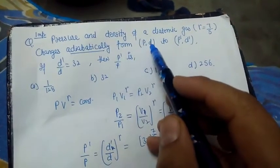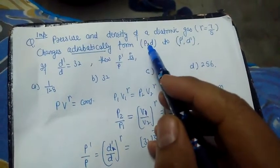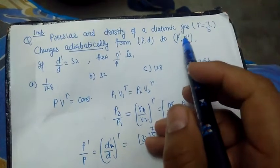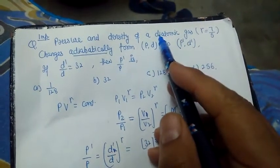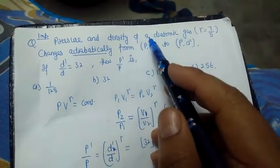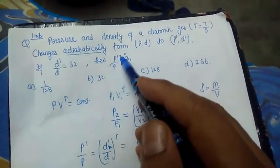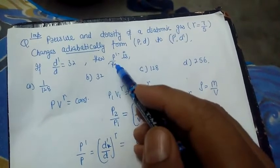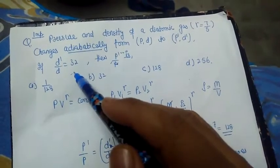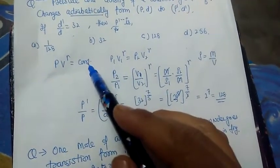The next problem: the pressure and density of a diatomic gas change adiabatically from (P, D) to (P', D'). The gas is diatomic so γ = 7/5. If the ratio of densities D'/D is given as 32, we need to find the ratio of final to initial pressure P'/P.